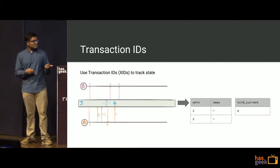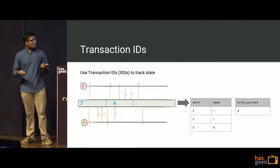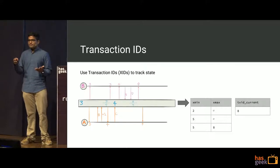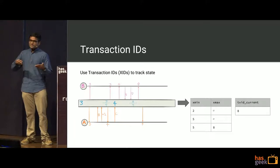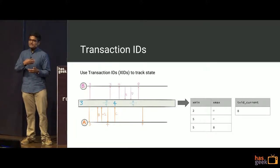This sort of setup where the values, say 2 and 5 or those ranges, are what determine visibility. So if you have a very long-running transaction, it's always going to see the value and prevent the table from ever clearing it up.